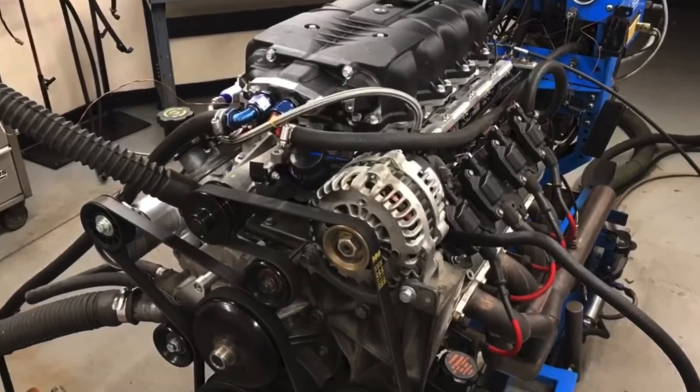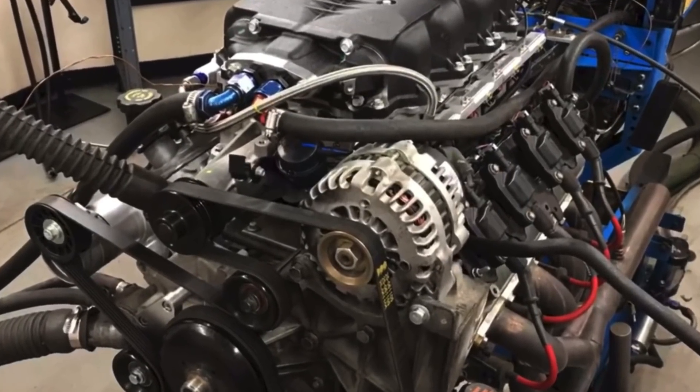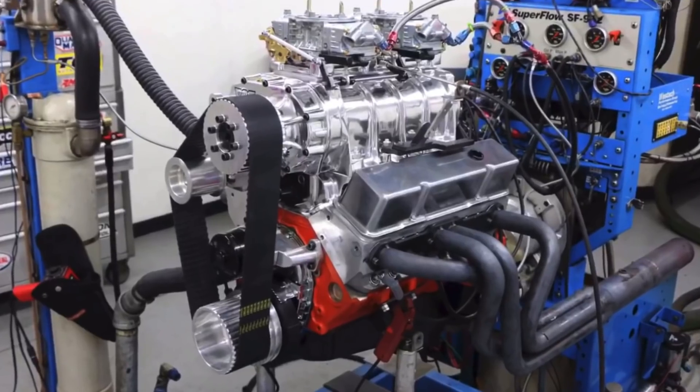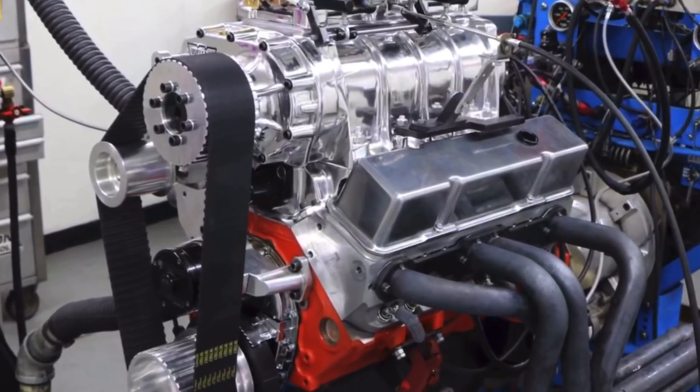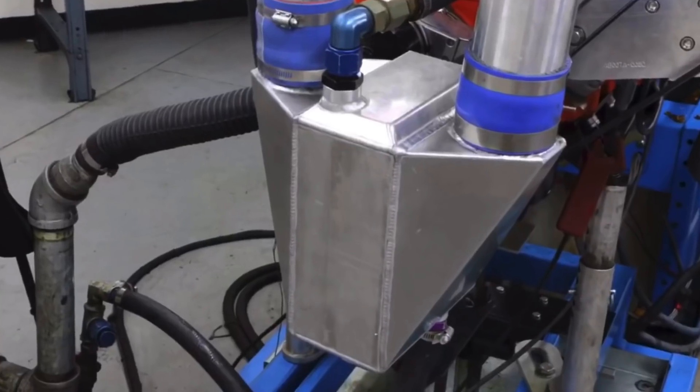In this video we're going to compare E85 fuel to 91 octane on three different performance applications. The first one is a supercharged 4.8 liter LS equipped with the M122 Cadillac supercharger. The next combination is a Power Adder 383 small block Chevy stroker equipped with a carbureted 671 supercharger, and then again the same motor with an intercooled ProCharger.